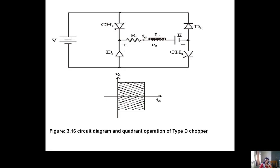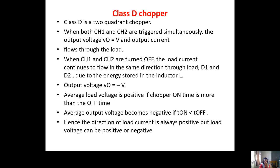Current flowing through the load will be continuous because the inductor stores energy. When both choppers are off, the output voltage V0 equals minus V. The average load voltage is positive if the chopper on-time is more than half the period, and negative if the on-time is less than half the period. Hence, the direction of load current is always positive but load voltage can be positive or negative.